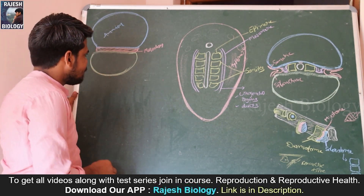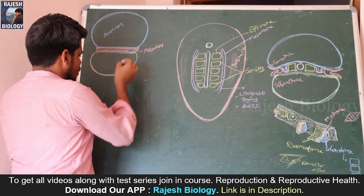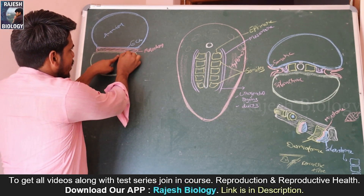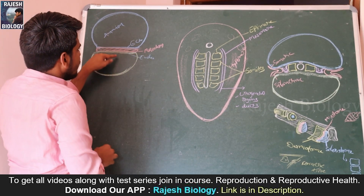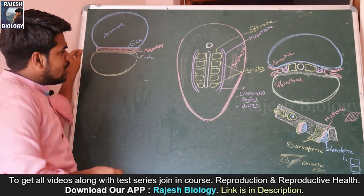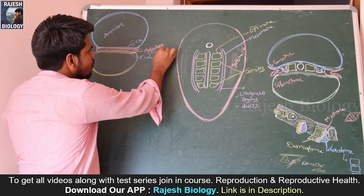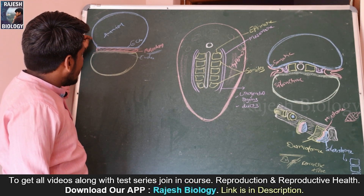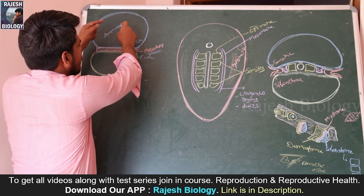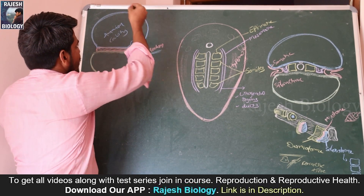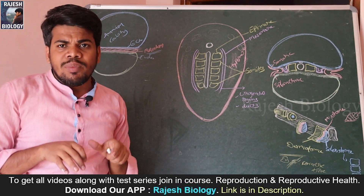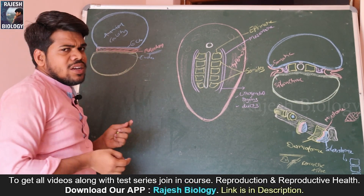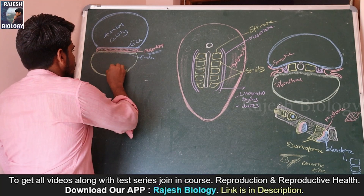If you observe the diagram, the blue color layer is the ectoderm, the green color layer is the endoderm, and in between ectoderm and endoderm there is a red color layer — that is the mesoderm. The ectoderm is going to develop into a cavity — the amniotic cavity — in which the baby develops. From the endoderm, it is going to develop into the yolk sac.